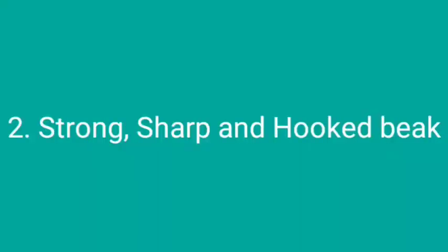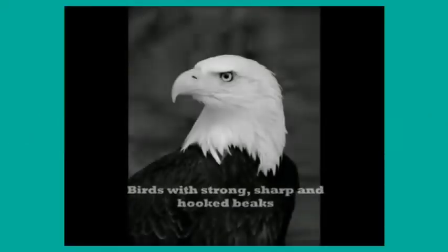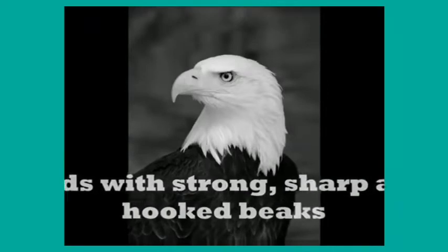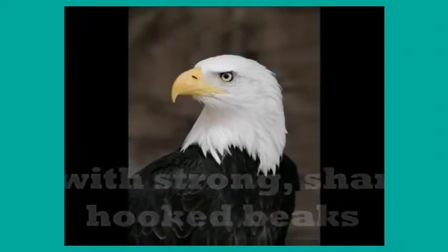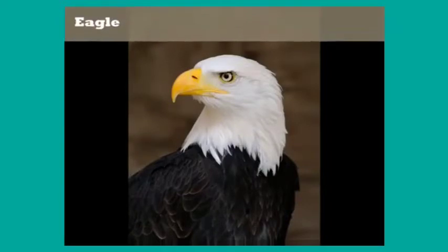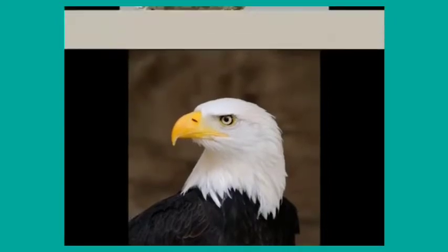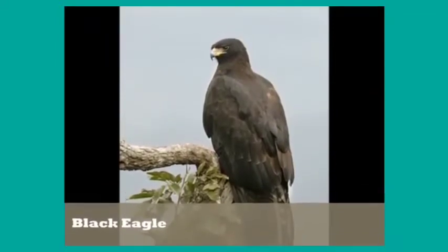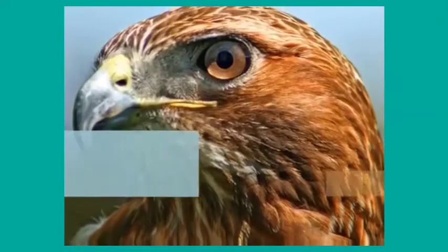The second type of beak is the strong, sharp and hooked beak. Now let us see the birds having this type of beak. These birds have a sharp and hooked beak — see the beak, children — and they use this beak to catch and kill their prey. Prey means their food, and they tear the flesh to eat it.